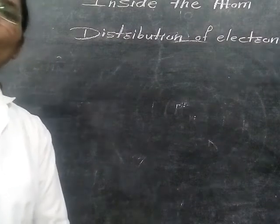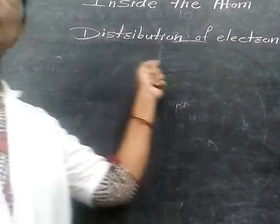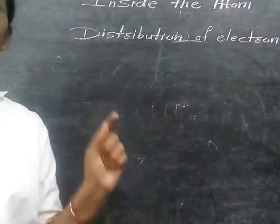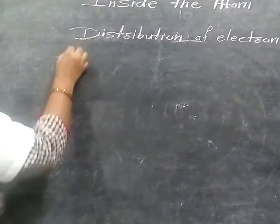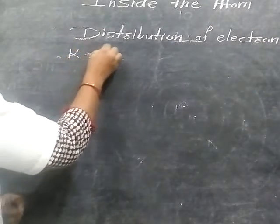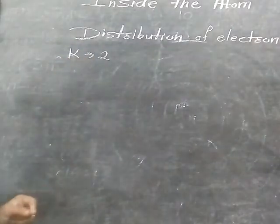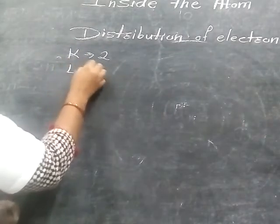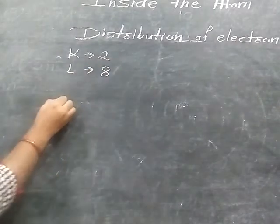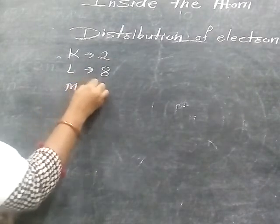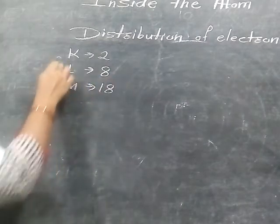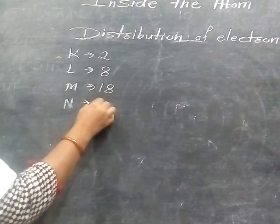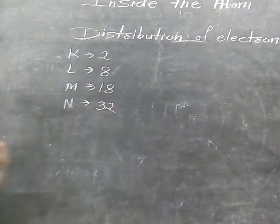Good morning students. In the previous video, we discussed the distribution of electrons according to the K, L, M, and N shells. We already found that the capacity of the K shell is 2 electrons, the capacity of the L shell is 8 electrons, and we discussed the capacities 2, 8, 18, and 32 for K, L, M, and N shells respectively.